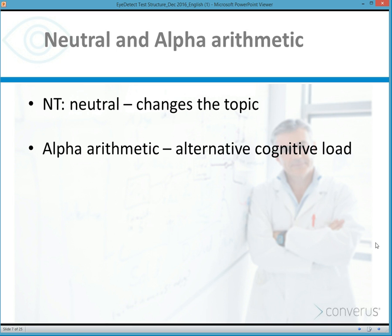In addition to R1 and R2 issues, we also use neutral questions — trivia type questions, world knowledge questions — which basically change the topic for the examinee, allowing them to stop thinking about the primary issues for a moment. We also use alpha arithmetic questions, which are simple math questions that change the topic and show a different level of cognitive load reaction.